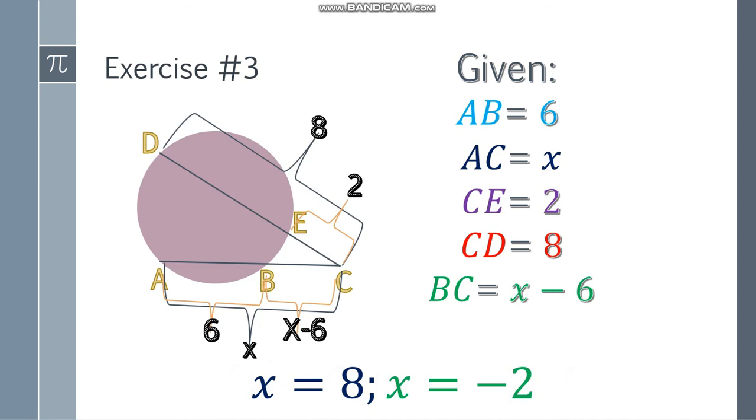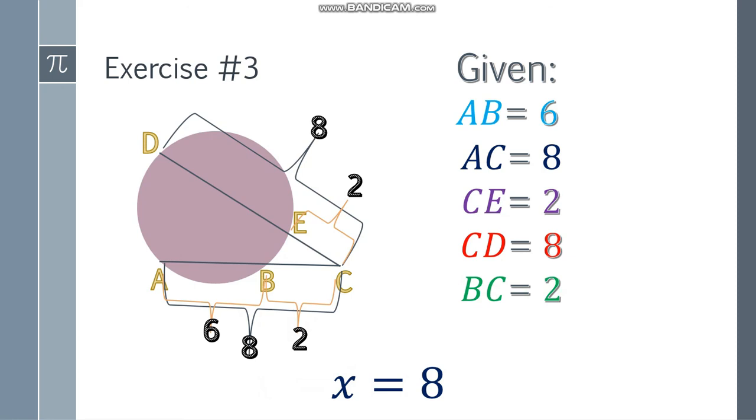Remember, in measurement we don't accept negative values, so we take x equals 8. Now we know the whole AC is 8, and BC is 8 minus 6, which equals 2. Notice they're the same as the other segment - the whole DC is 8 and the whole AC is also 8.